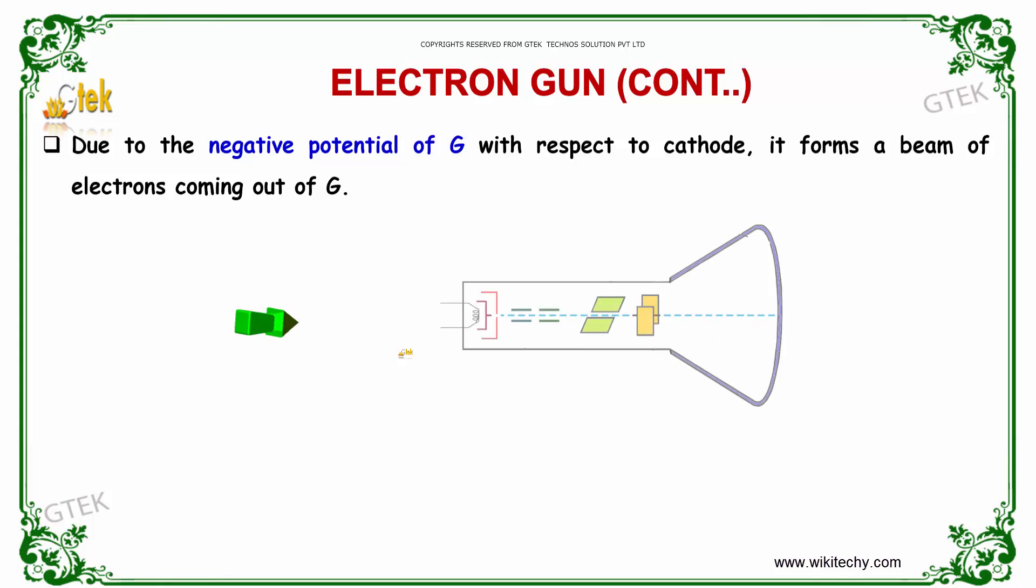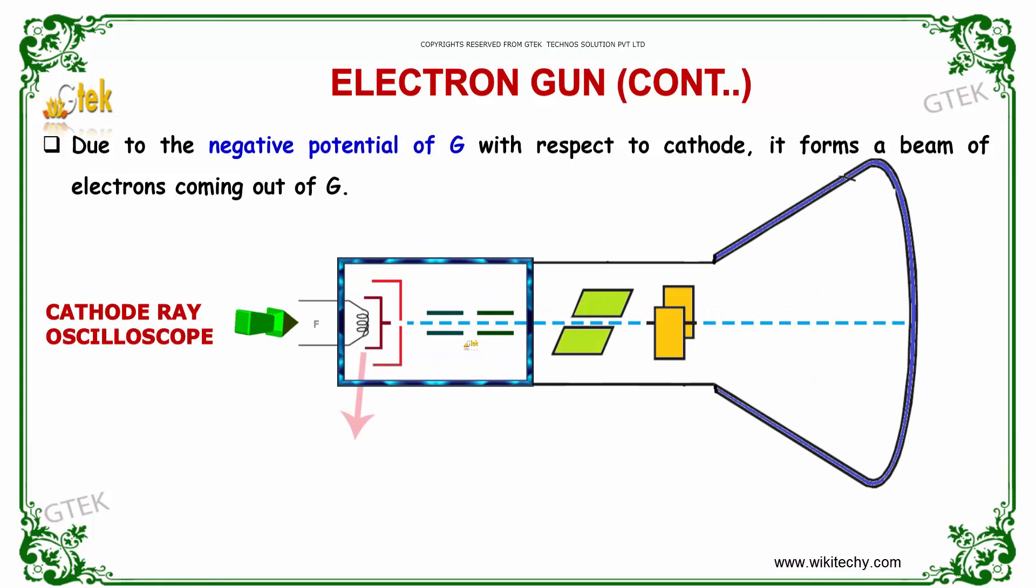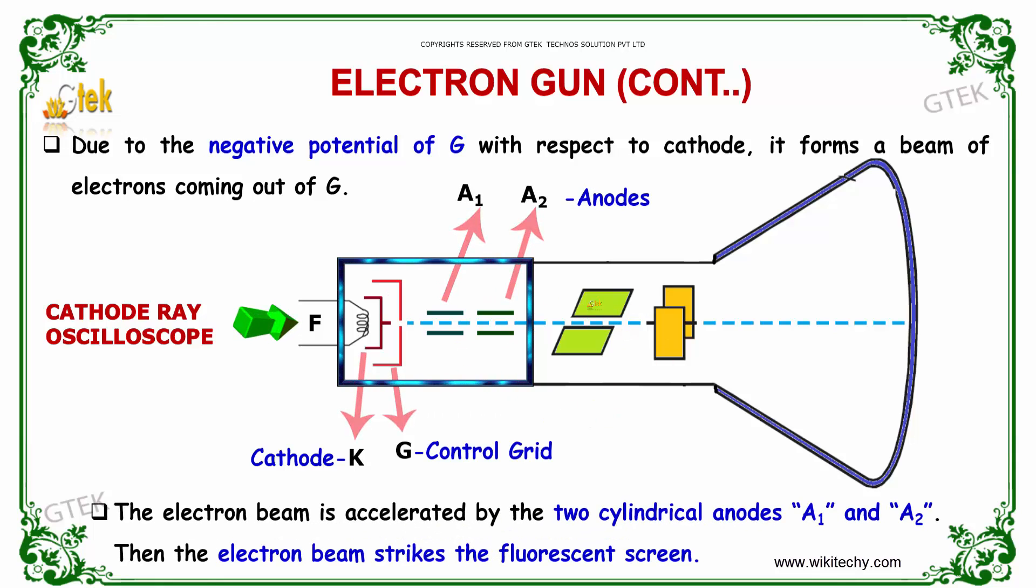Due to the negative potential of G with respect to cathode, it forms a beam of electrons coming out of G. Here G is indicating the control grid. So the electron beam is accelerated by the two cylindrical anodes A1 and A2. Then finally the electron beam strikes the fluorescent screen.